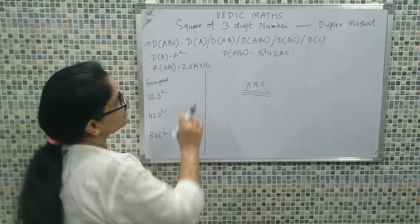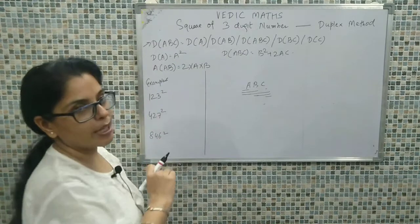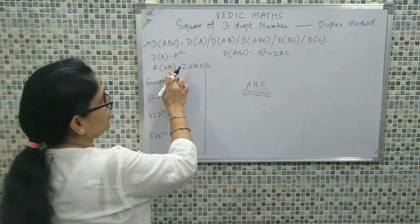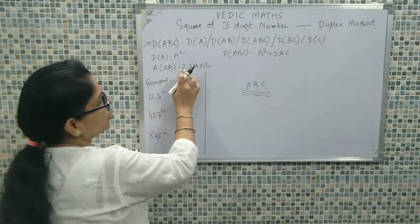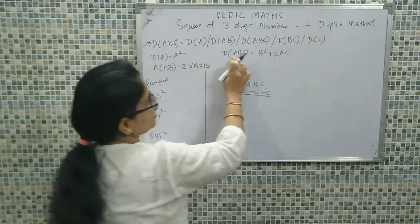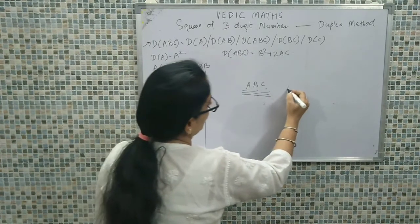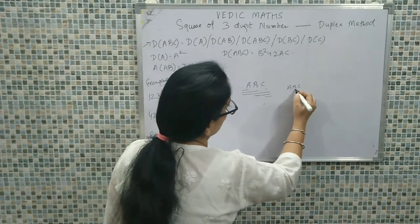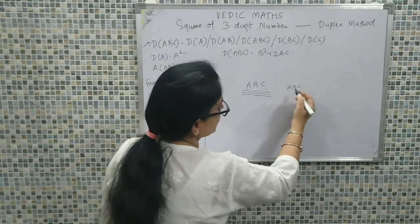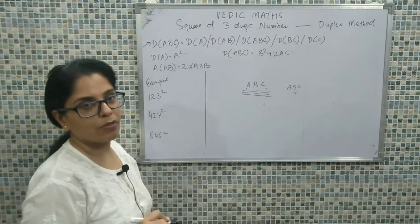For a single digit, the duplex will be A squared. The duplex of a two-digit number will be 2 times A times B. And the duplex of a three-digit number will be B squared plus 2 times A times C.